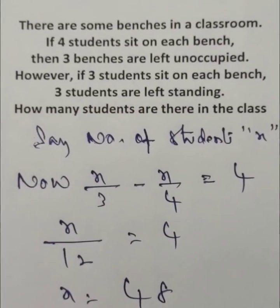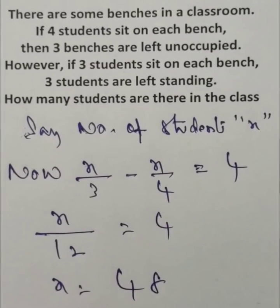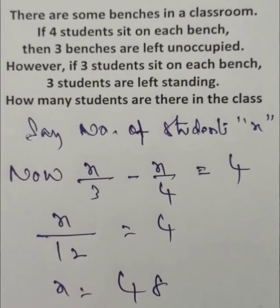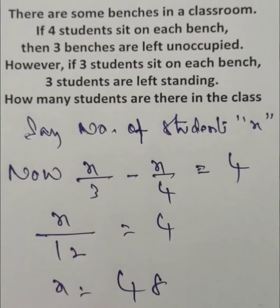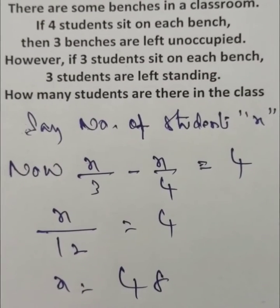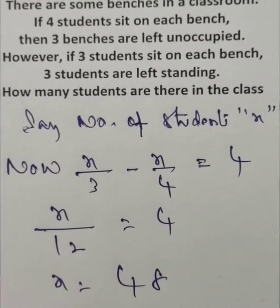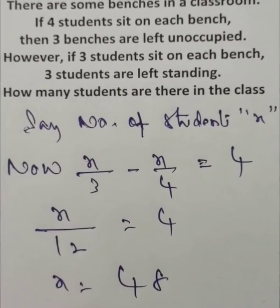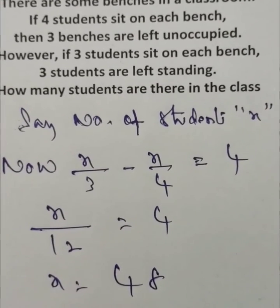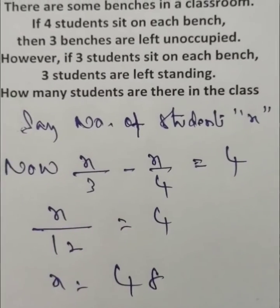Here the question is: how many students are there in the class? Let the number of students be x. If four students sit on each bench, the number of benches required is x/4. If three students sit on each bench, the number of benches required is x/3. Now, x/3 minus x/4 is equal to 3 plus 1, which is 4.